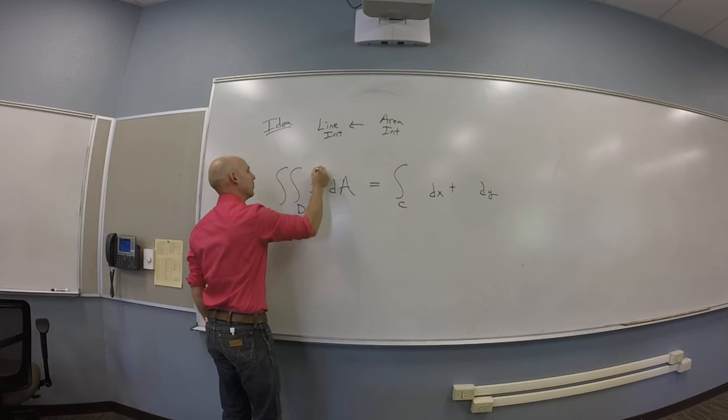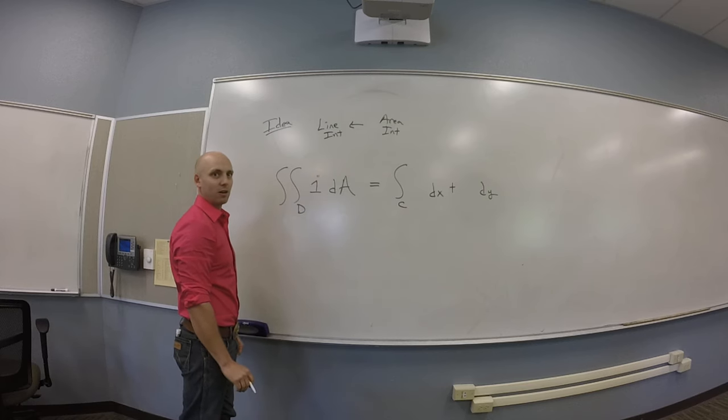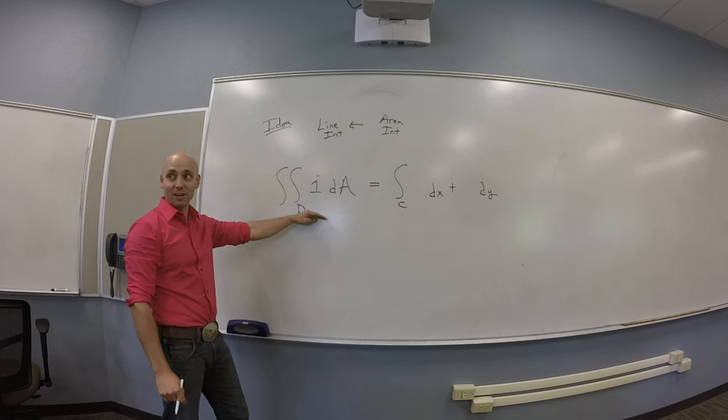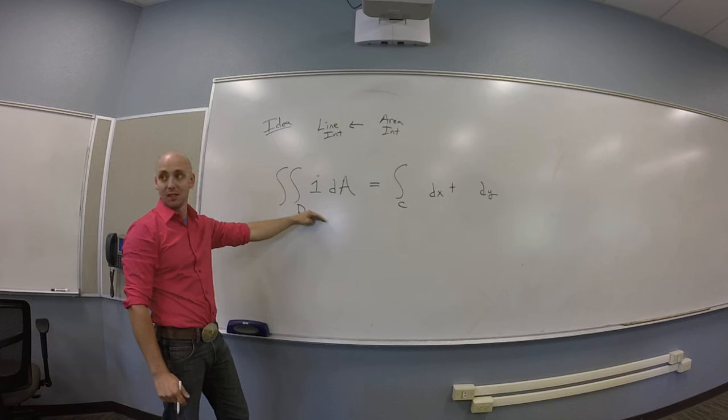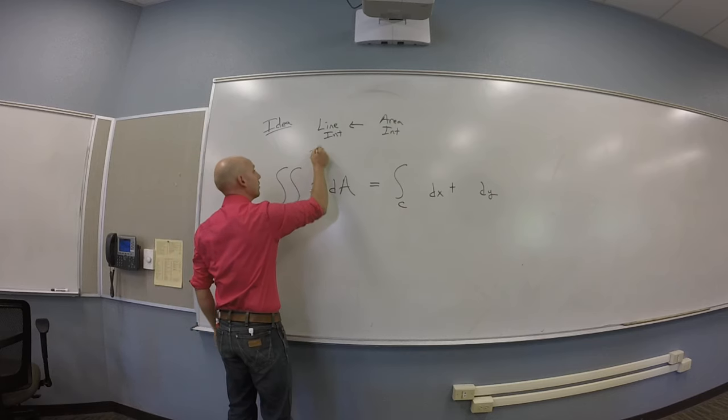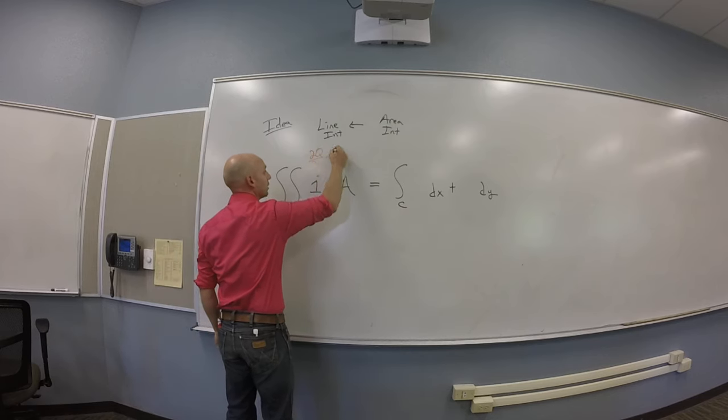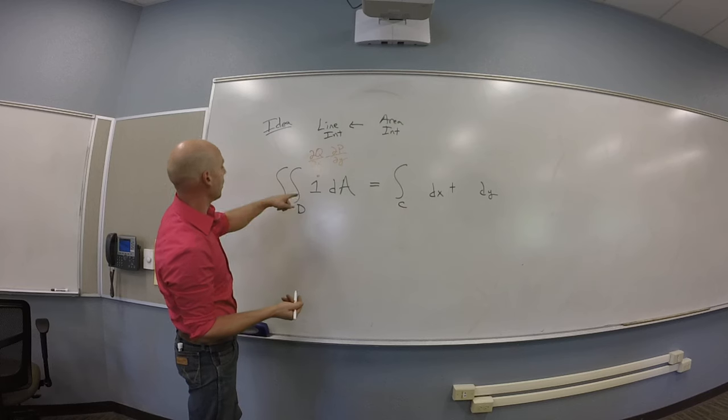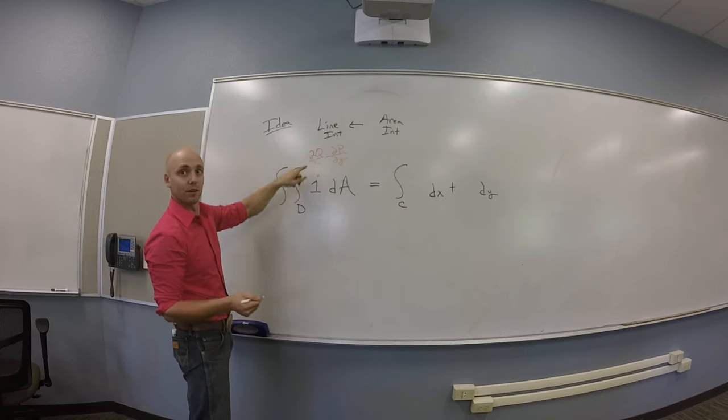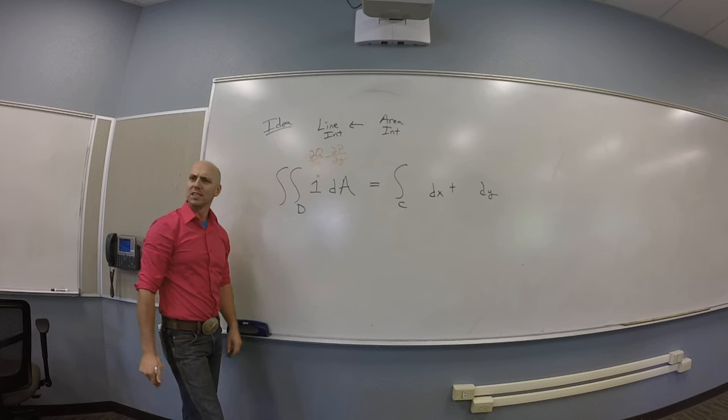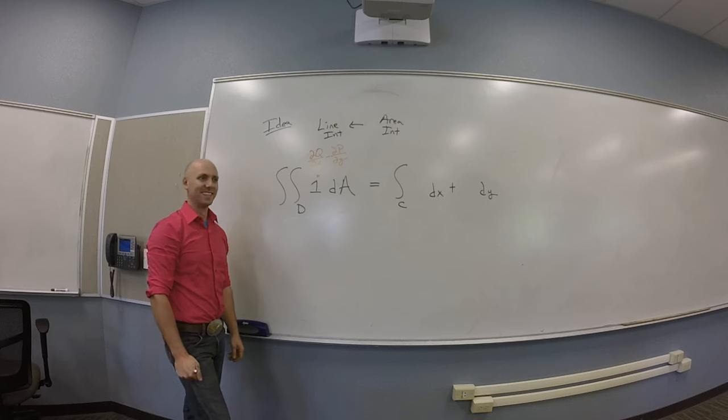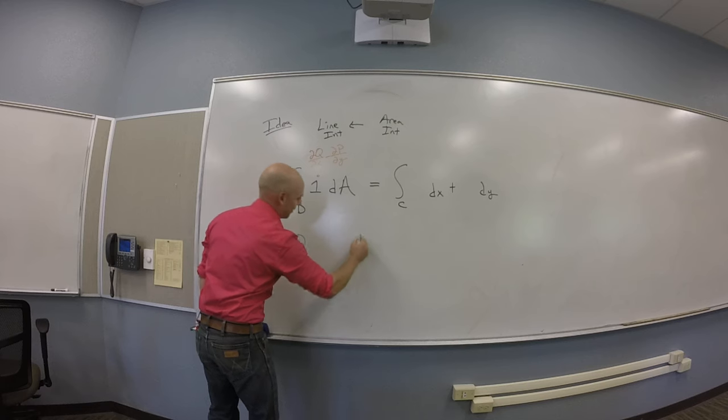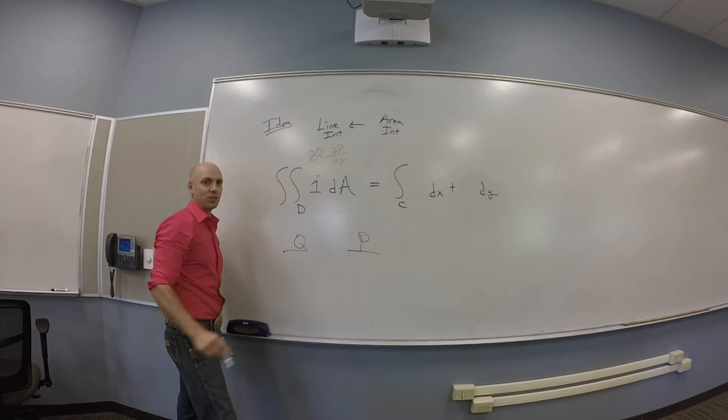So what's the integrand in the area side of Green's? Let me say that very precisely. Partial Q with respect to X minus partial P with respect to Y, right? Okay. So I'm thinking, if one is that stuff, it seems like I got a choice. Like there's a couple of ways for me to do this, I think. You guys see that?